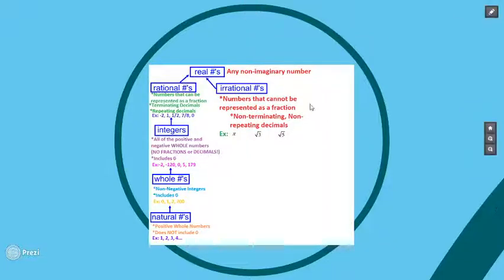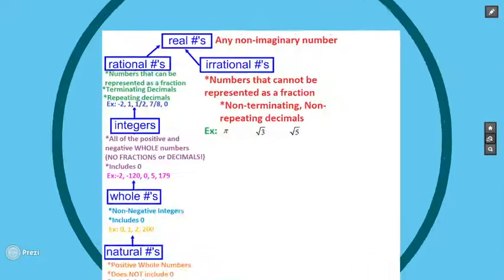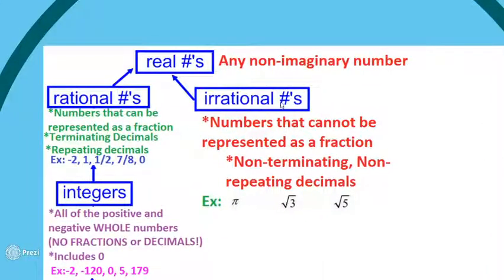Real numbers are any non-imaginary number, and they break down into two big categories: rational numbers and irrational numbers. A rational number is any number that can be represented as a fraction. If you can represent a number as a fraction, it is rational. Fractions obviously turn into decimals, and the easiest way to identify them is through fractions. If you divide the fraction and get a terminating decimal — meaning the decimal stops — that's rational.